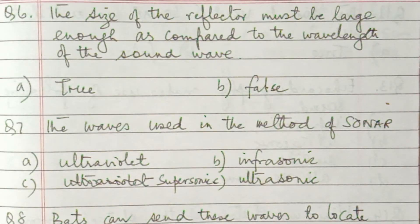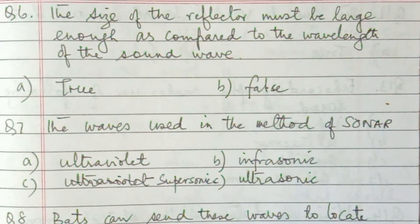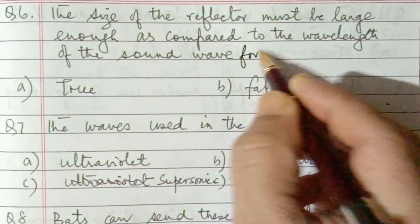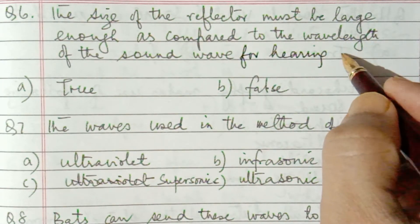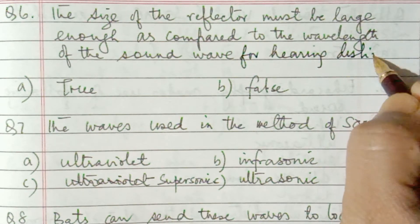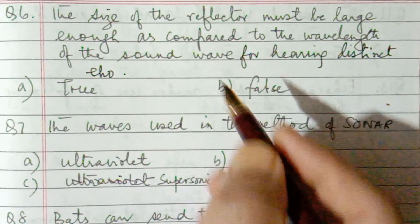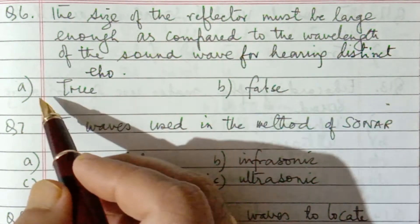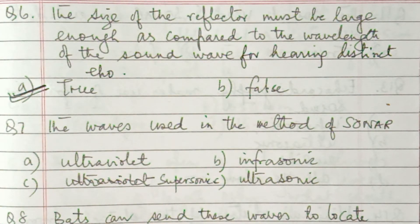Question number 6: the size of the reflector must be large enough as compared to the wavelength of the sound wave for hearing a distinct echo. This is correct — the size of the reflector must be large so that all the waves are reflected back.